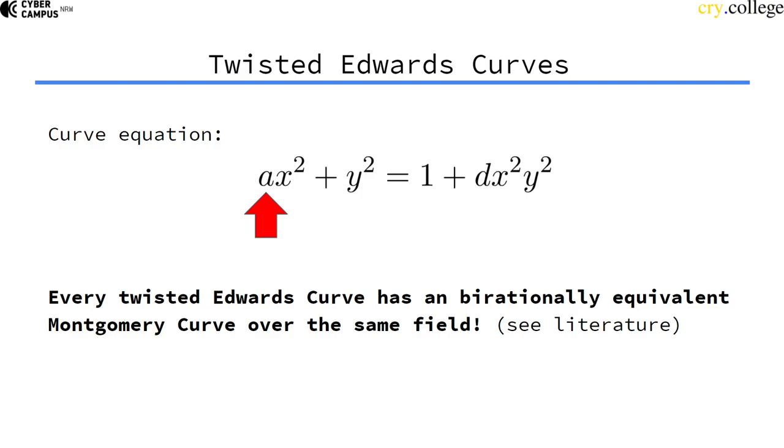it essentially means that we can find a map to map all points from the twisted Edwards curve onto a specific Montgomery curve, and the other way around from a Montgomery curve to a twisted Edwards curve.